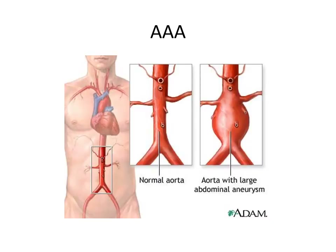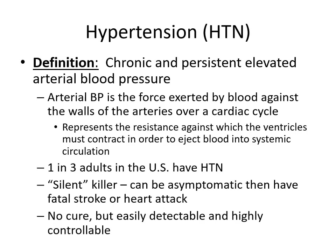Here you can see the bulging with an abdominal aortic aneurysm. Looking at hypertension, this is chronic and persistent elevated arterial blood pressure — the force exerted by blood against the walls of the arteries over a cardiac cycle. One in three adults in the U.S. has hypertension. This is considered a silent killer — it can be asymptomatic and then a patient may have a fatal stroke or heart attack. There's no cure for hypertension, but it's easily detectable and highly controllable.